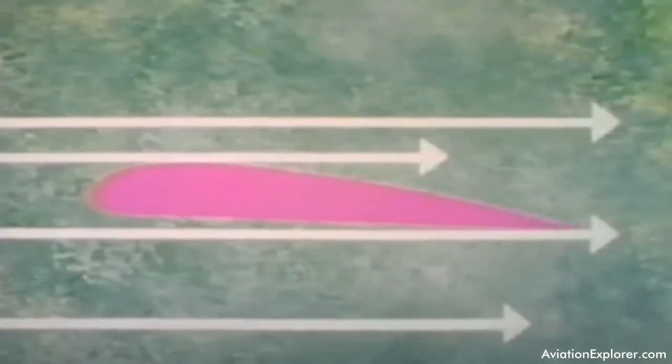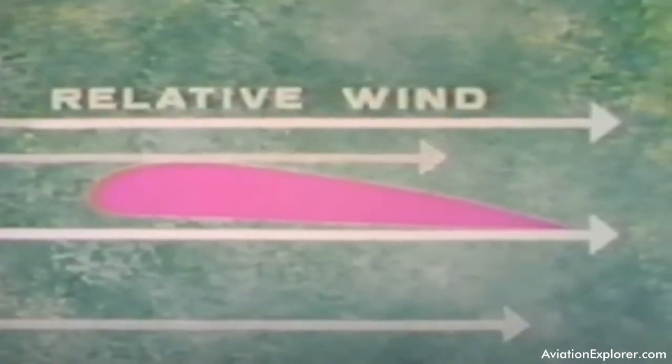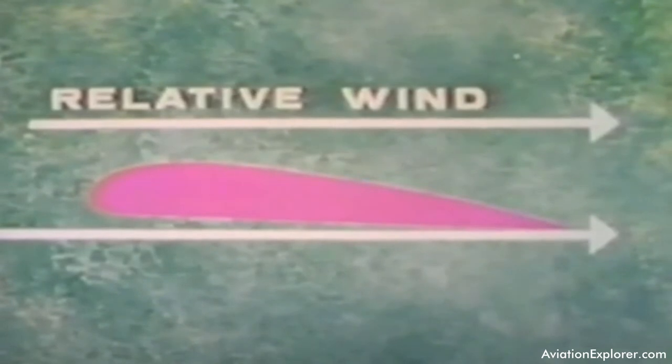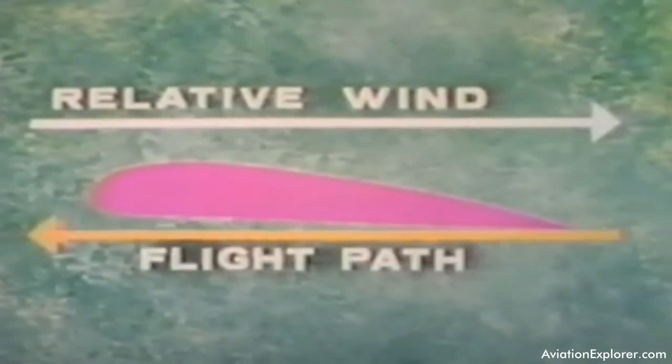The airflow striking the fixed wing airfoil of an aircraft, or the aircraft itself, is called the relative wind. The direction of the relative wind is always opposite to and parallel with the flight path of the airplane. In level flight, therefore, the relative wind and the flight path are horizontal and parallel.